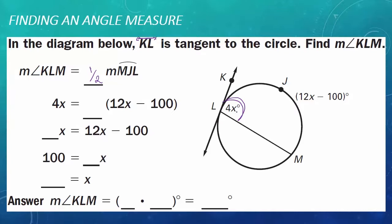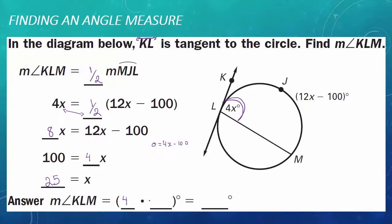The measure of angle KLM is 4x, and the measure of arc MJL is 12x minus 100. So we set up the equation: 4x equals one-half of (12x minus 100). Multiplying both sides by 2 gives 8x equals 12x minus 100. Subtracting 8x from both sides: 0 equals 4x minus 100. Adding 100 to both sides: 100 equals 4x. Dividing by 4 gives x equals 25. So the measure of angle KLM is 4 times 25, which is 100 degrees.